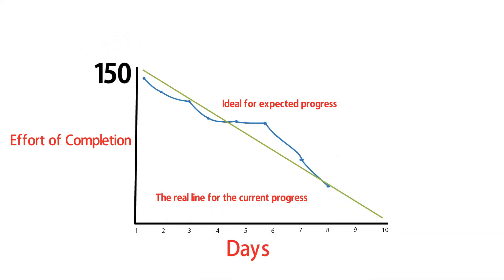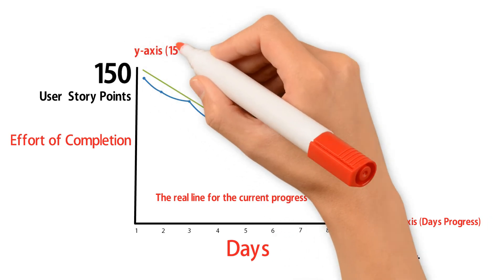Assuming 150 user story points to be completed in a 10-day sprint, the X axis represents days of expected work while the Y axis shows effort of completion.